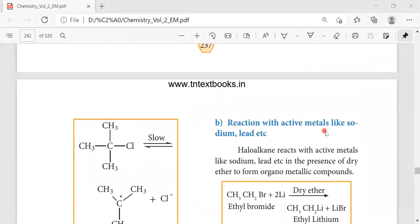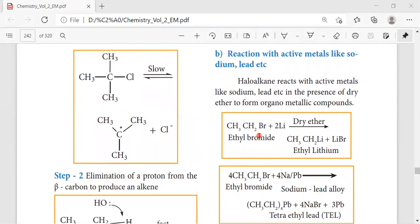Then comes the reaction with active metals like sodium and lithium. We have taken ethyl bromide. On treatment with lithium in the presence of dry ether, we get the product as ethyl lithium with elimination of lithium bromide. It is an organometallic compound - the metals with organic groups form organometallic compounds.